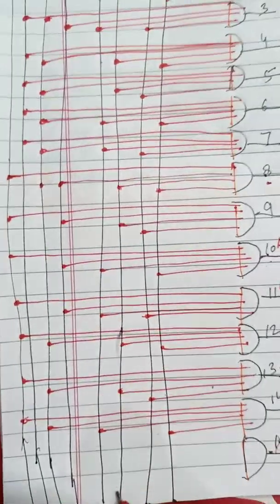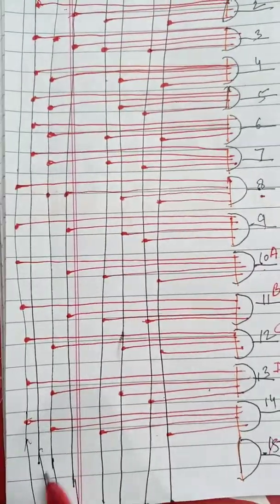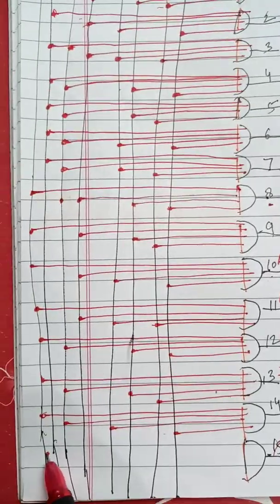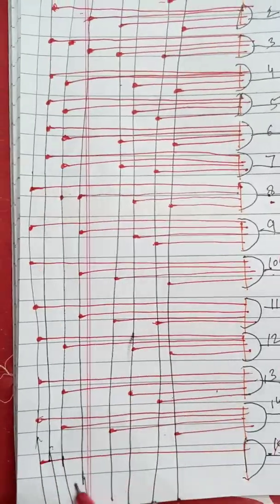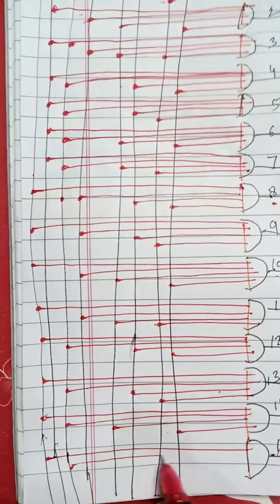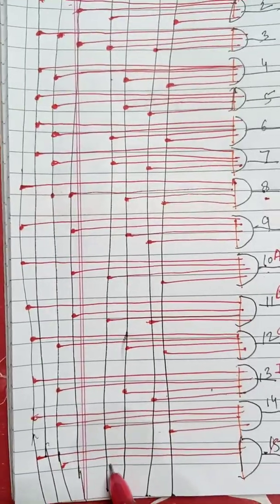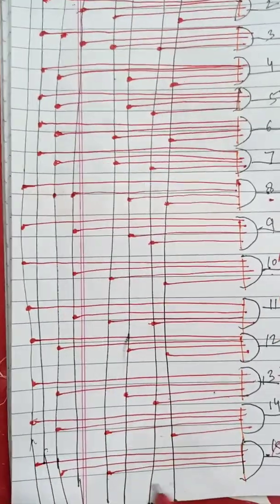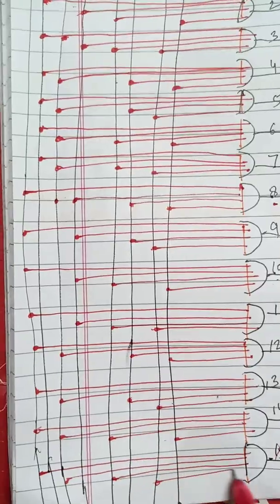And for F, all the input lines, all the inputs will be high. 1, 1, 1, 1.